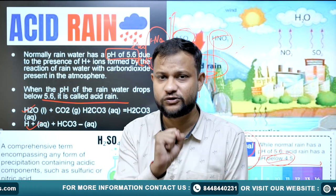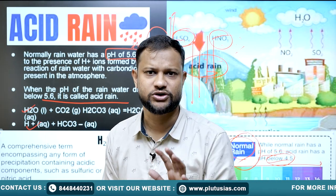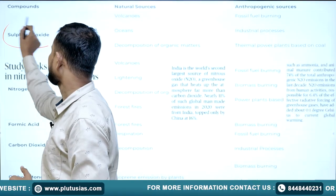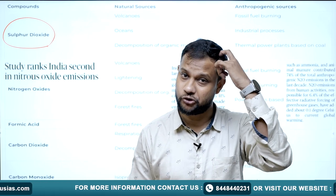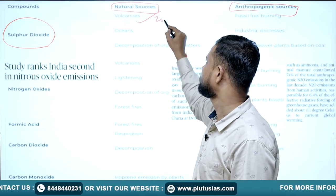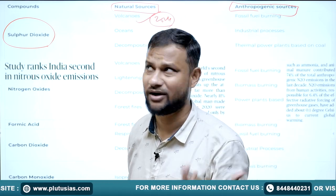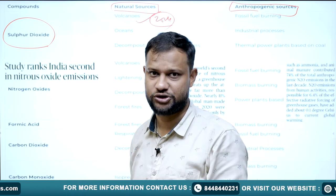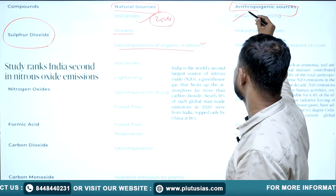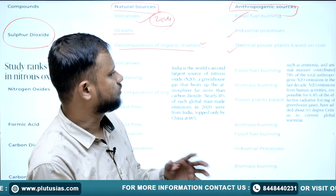In competitive examinations, particularly UPSC and many others, questions on sources of acid rain are frequently asked. The most prominent source is sulfur dioxide, SO2. Natural sources include volcanoes — as asked in UPSC 2024, which mentioned pyroclastic material, ashes, oxides of sulfur, and oxides of nitrogen — as well as oceans and decomposition of organic matter. Anthropogenic sources include fossil fuel burning, industrial processes, and thermal power plants based on coal and petroleum.